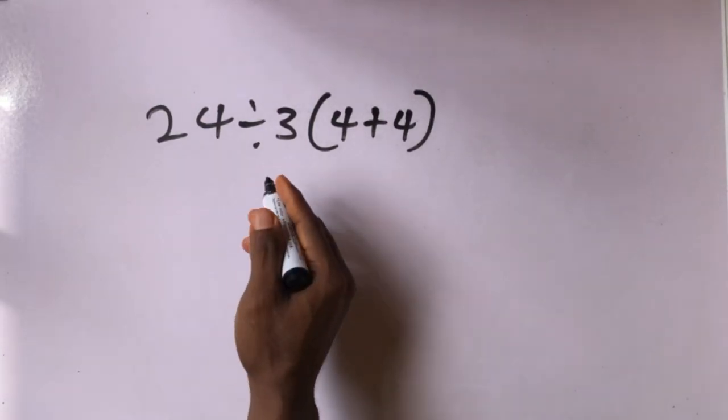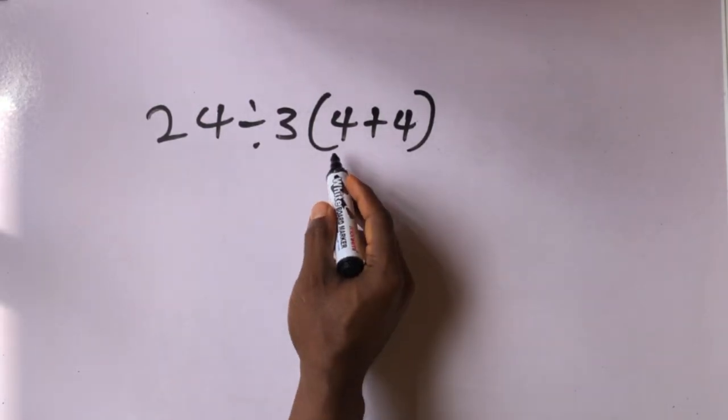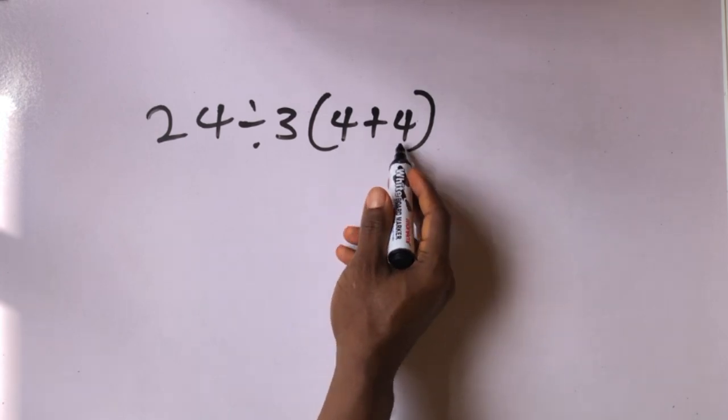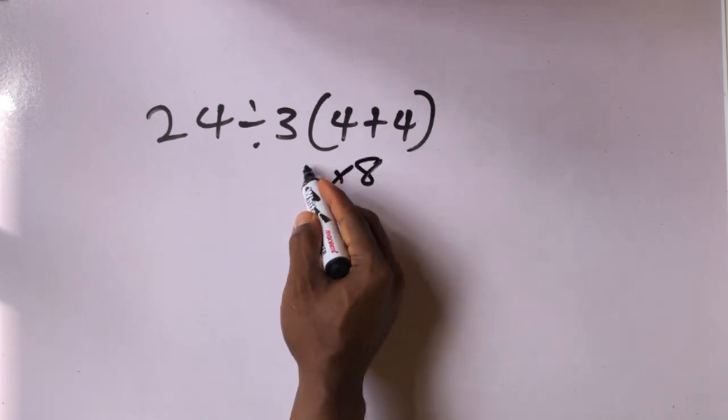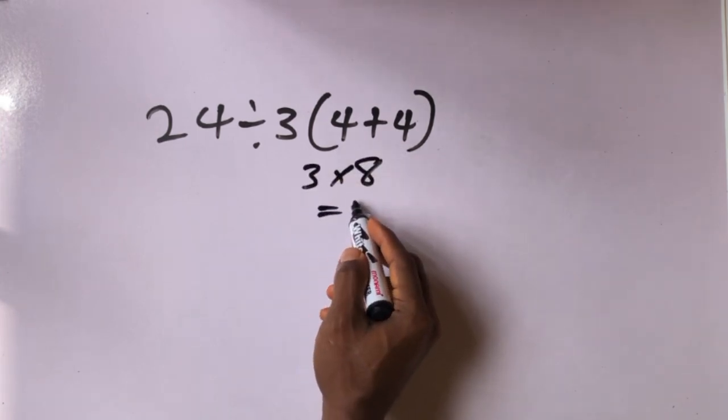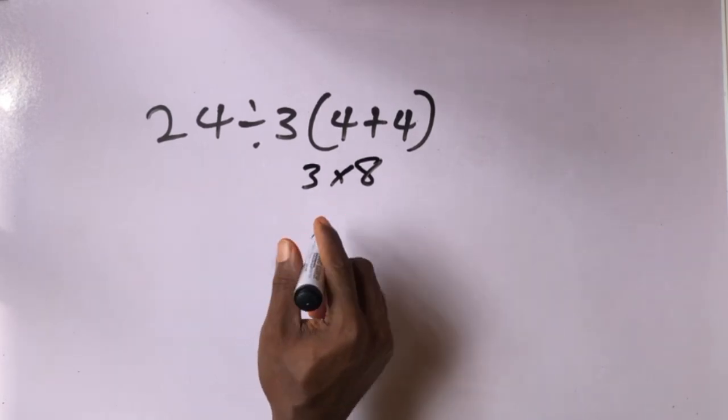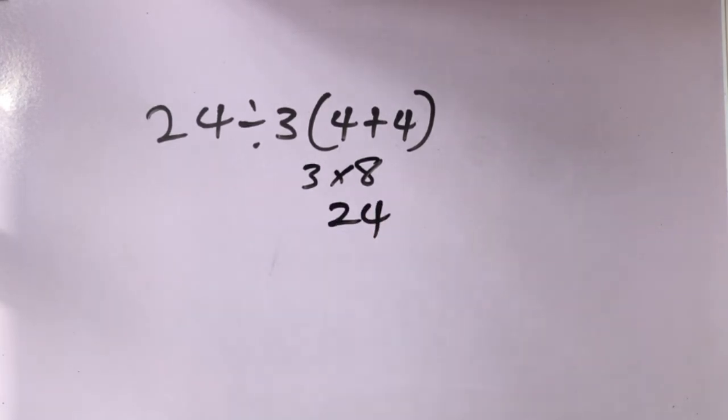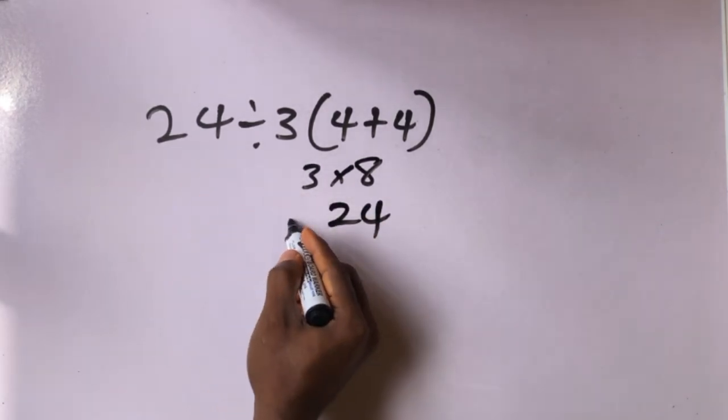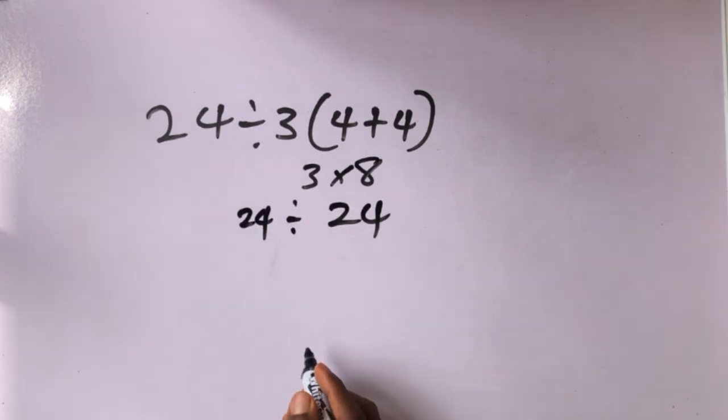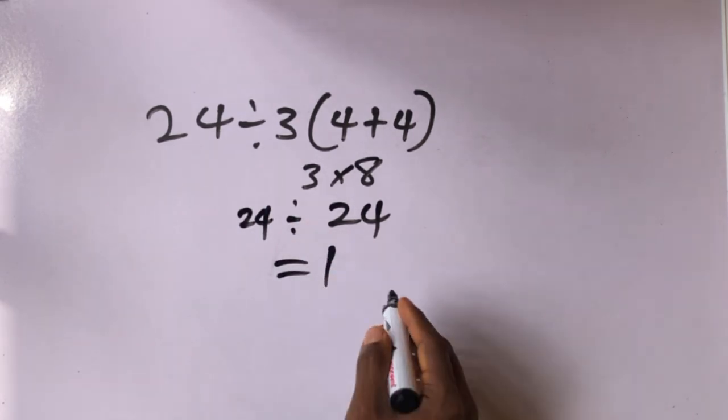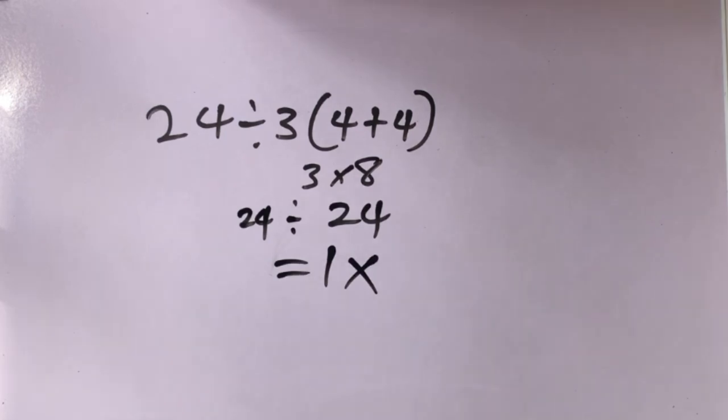Hi guys. 4 plus 4, 4 plus 4 will give us 8, times 3 equals 24. 24 divided by 24. If you also want, but this answer is not correct according to order of operations.